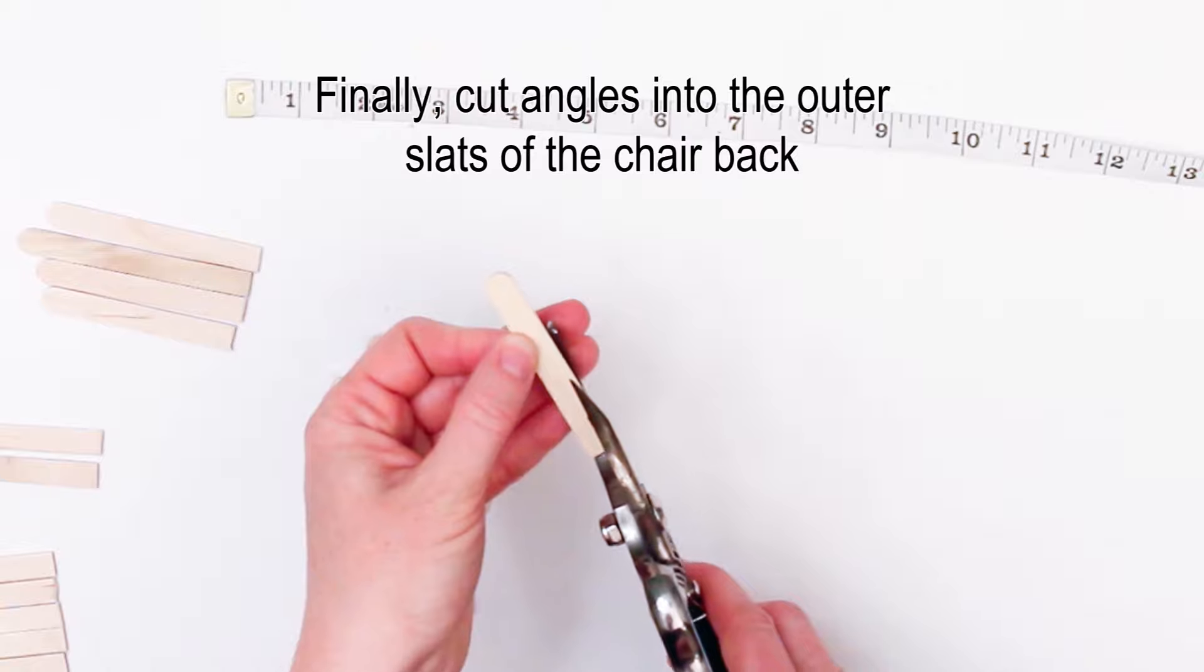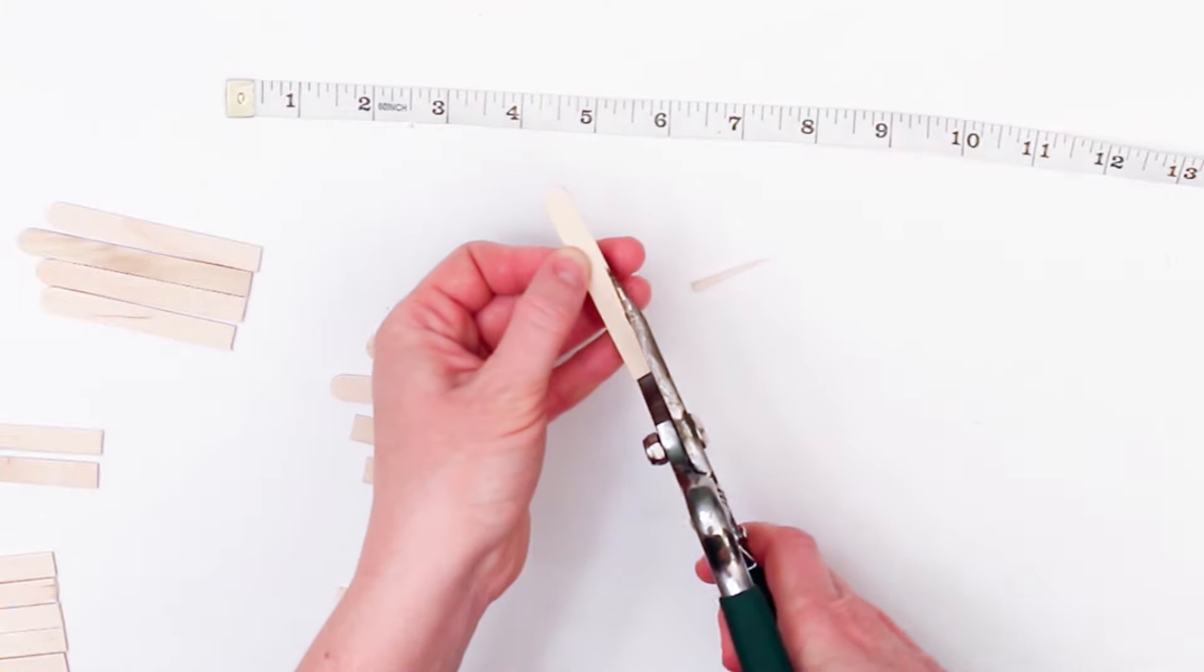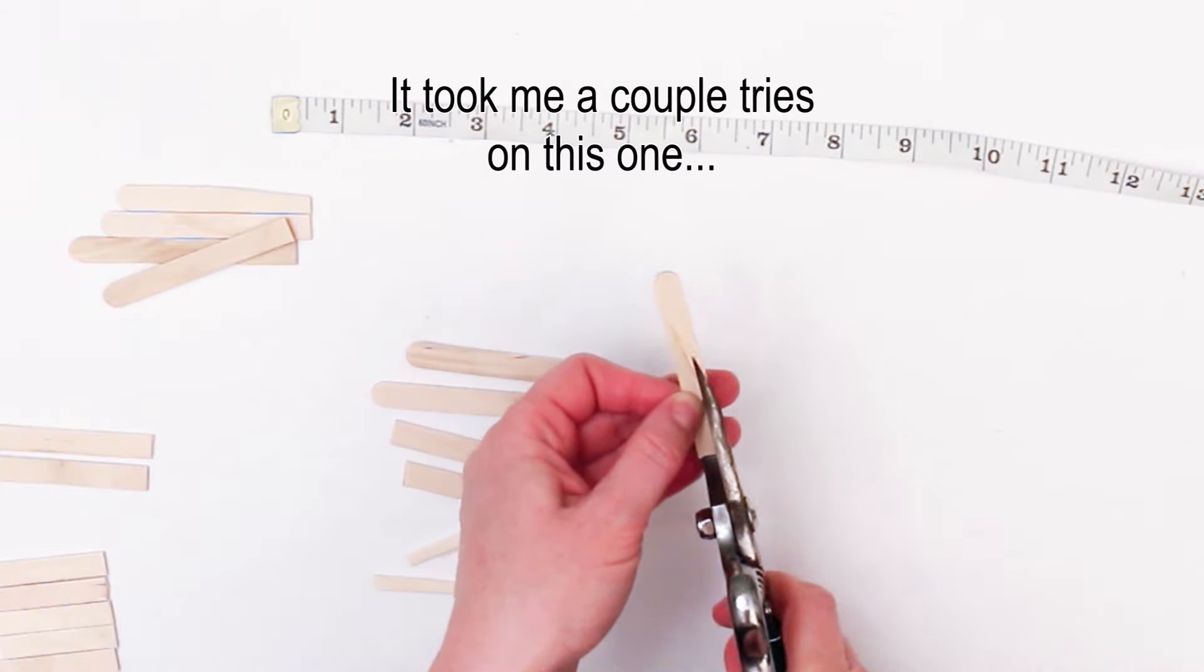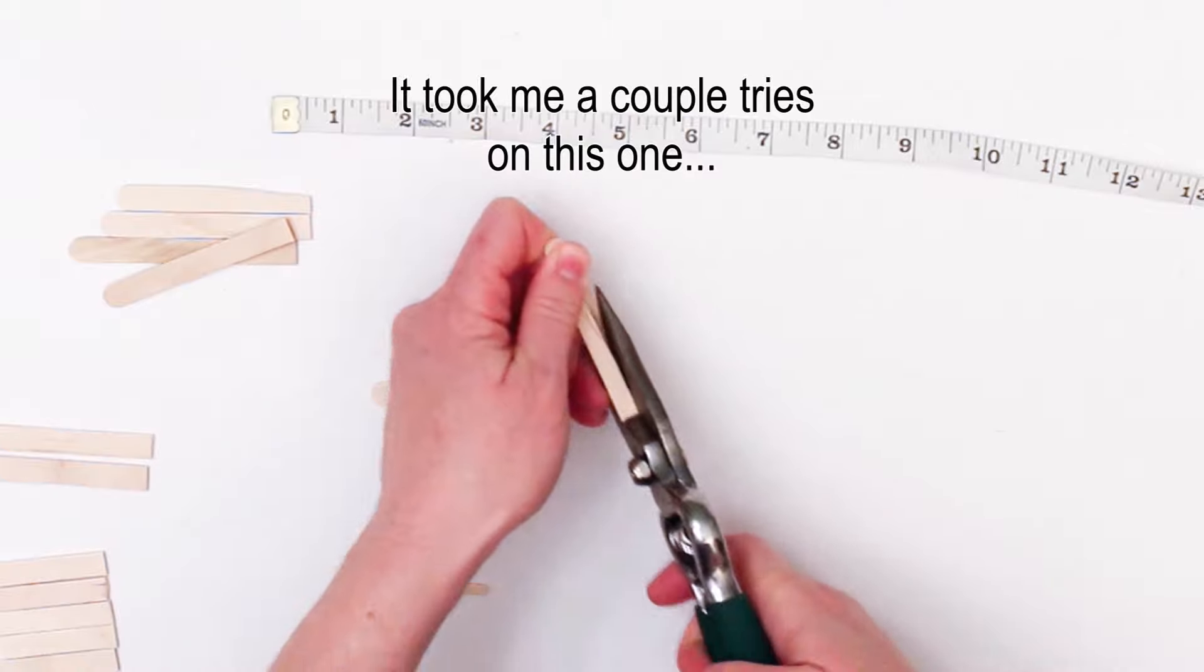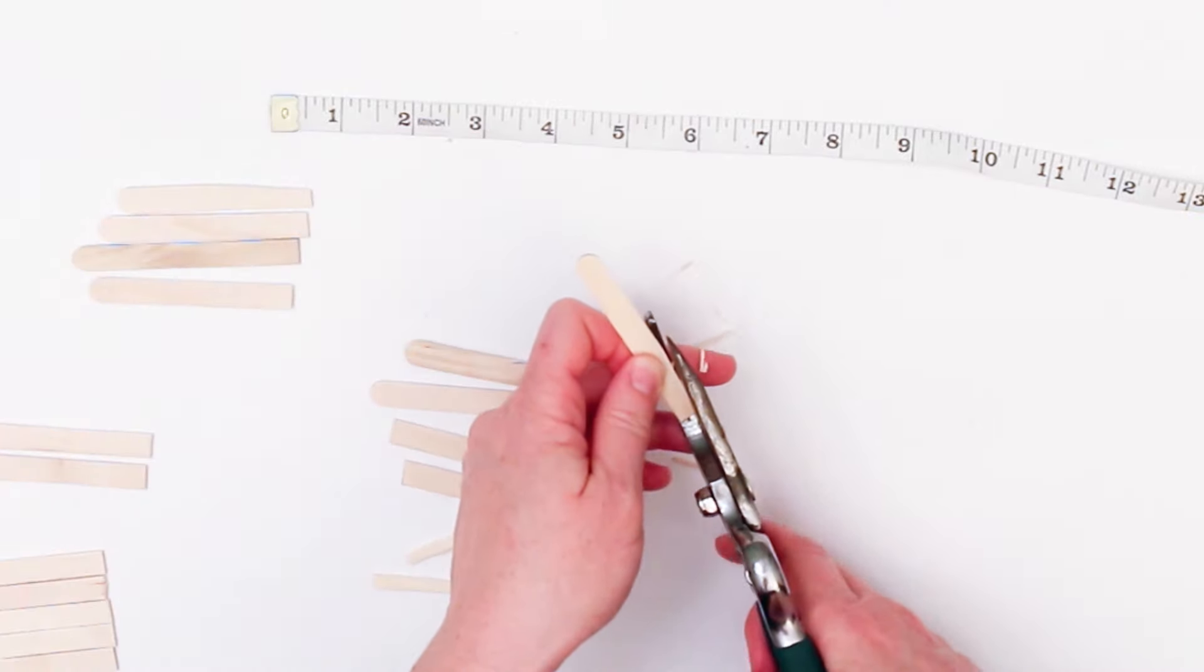Finally to give the chair back that truly Adirondack style you'll want to cut little angles off the bottom of the outer slats of the chair back. This may take a couple tries because the popsicle sticks tend to want to crack along the middle but just do little bits at a time and you'll get it.